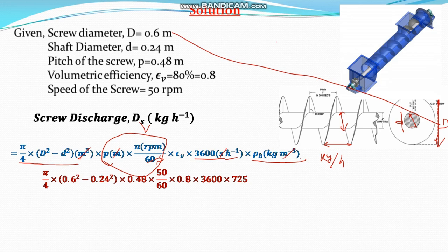Now, putting all the values together that is pi by 4, D is 0.6 capital D and small is 0.24 and 0.48 is the pitch meter, then 50 is the rpm is given for 60 and 0.8 is the volumetric efficiency.